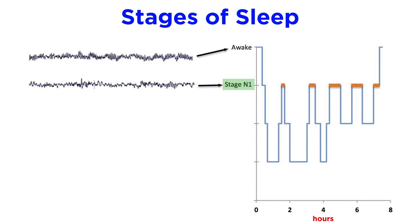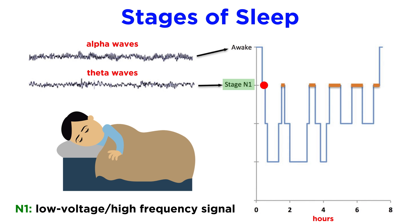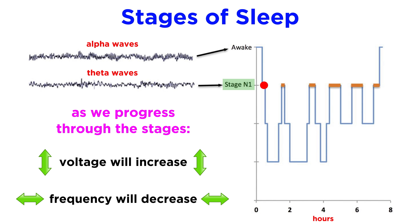In stage one, called N1, a person has shut their eyes and is drifting off to sleep. Theta waves begin to overtake the high-frequency waves of the alert state, and then once asleep, a low voltage and high-frequency signal develops. As we move through the stages, the voltage will slowly increase while the frequency slowly decreases.